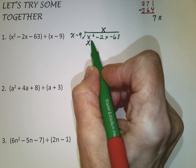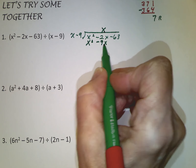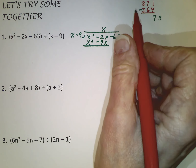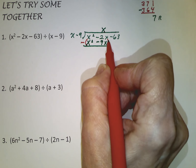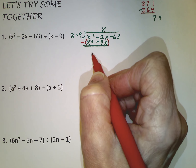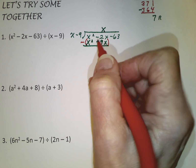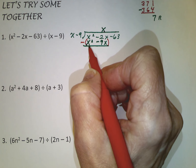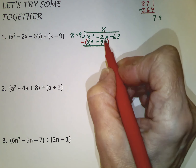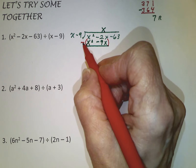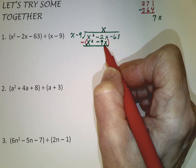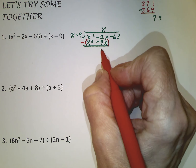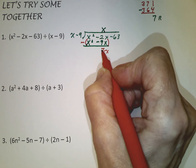So x goes up there. Now just like we took 5 times the entire 52, we take x times the entire divisor (x minus 9): x times x, and x times negative 9. Then the next step is key — just as we did above, we subtract, and I really recommend putting parentheses around it to avoid mistakes. So x squared minus x squared zeros out — and they should cancel; if the first term doesn't cancel, something's wrong. Then negative 2x subtract negative 9x is the same as negative 2x plus 9x, which is 7x.